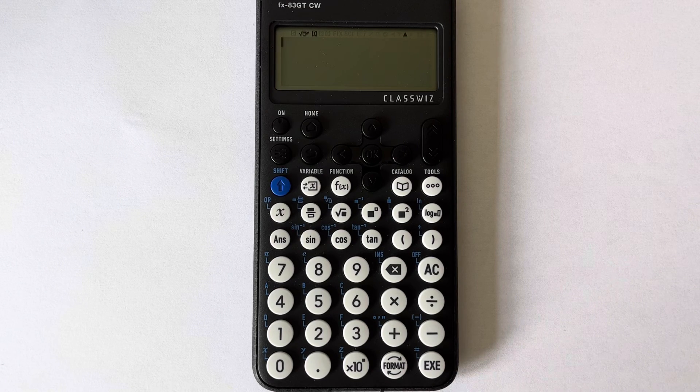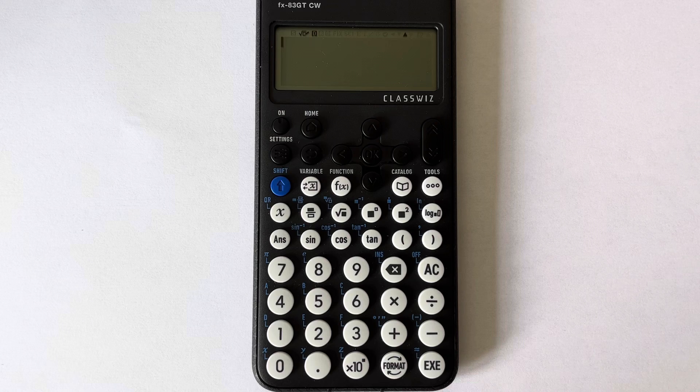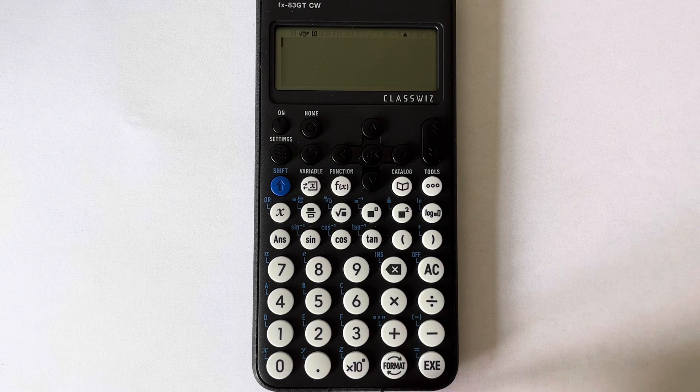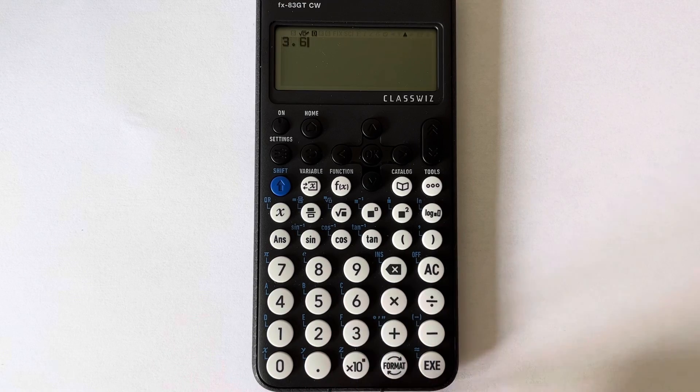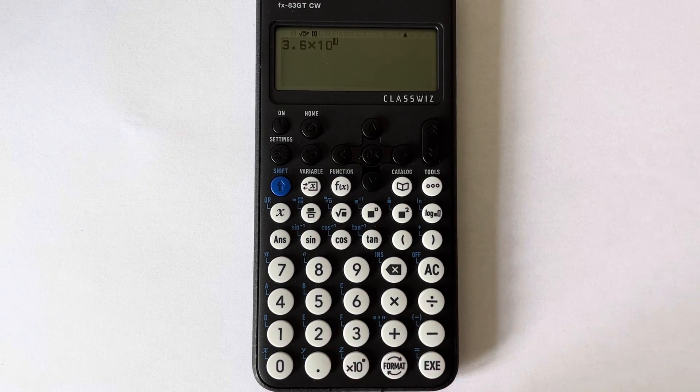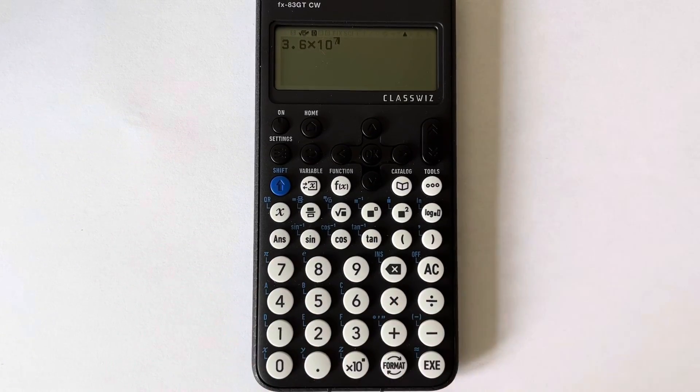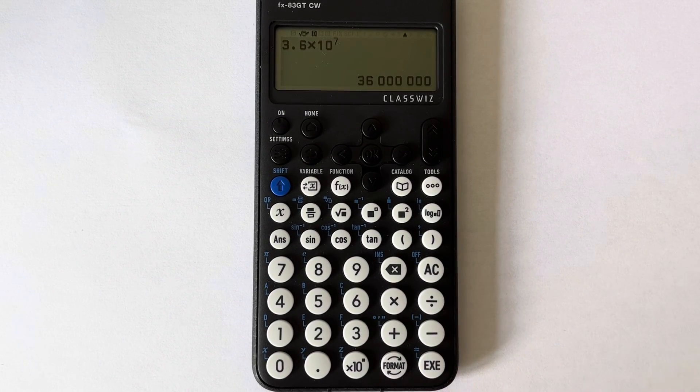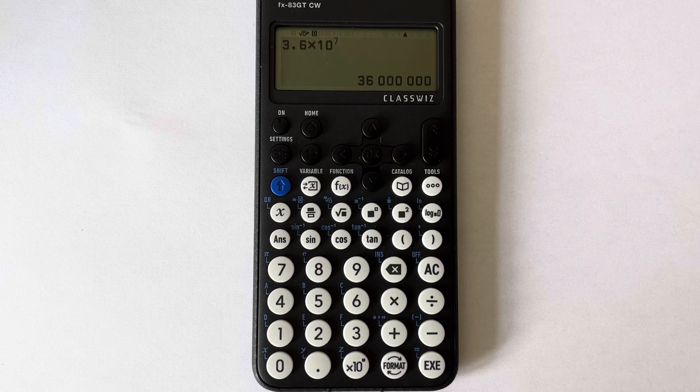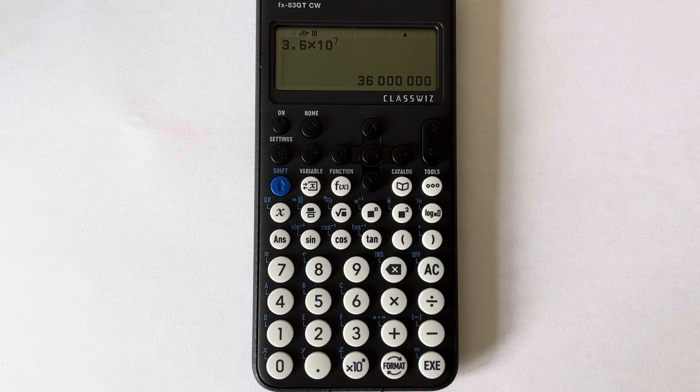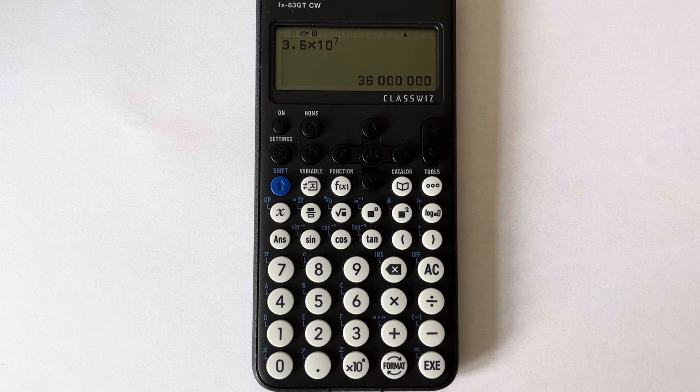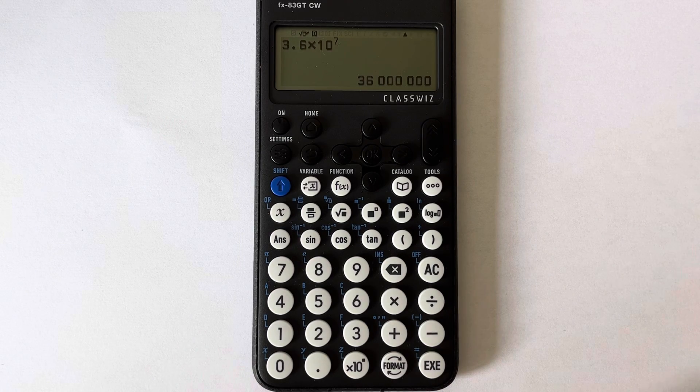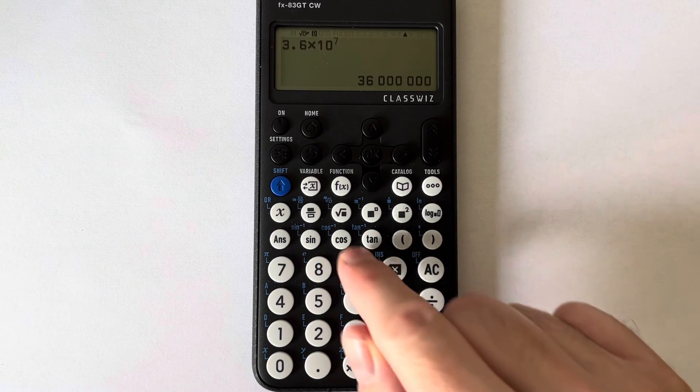In standard form, let's type in 3.6 times 10 to the 7. So if we go 3.6, press the times 10 key, and then put the 7 in the box there. Press the equals and there you go, get the answer: 36 million. So it's much better than the old Casio calculators. Let's do one more example.